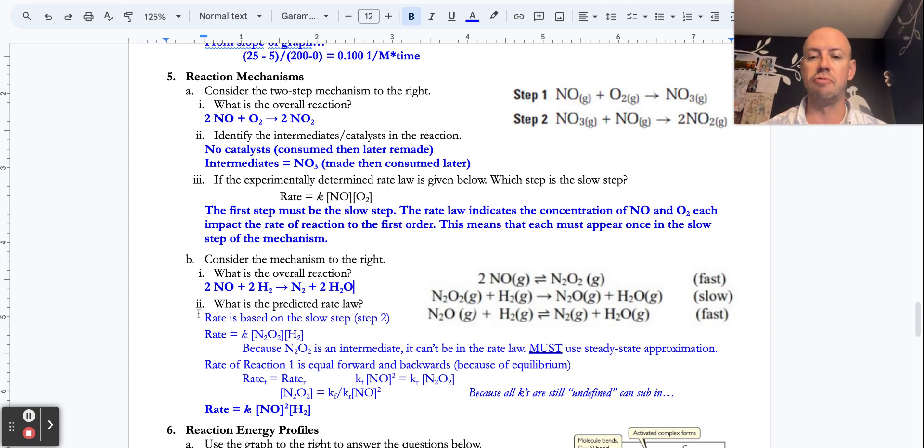So then the rate law is based upon the slow step. So the thing that slows us down is when N2O2 and hydrogen collide. The problem with that, we've got that right there, N2O2 is an intermediate. So it can't be in the rate law.